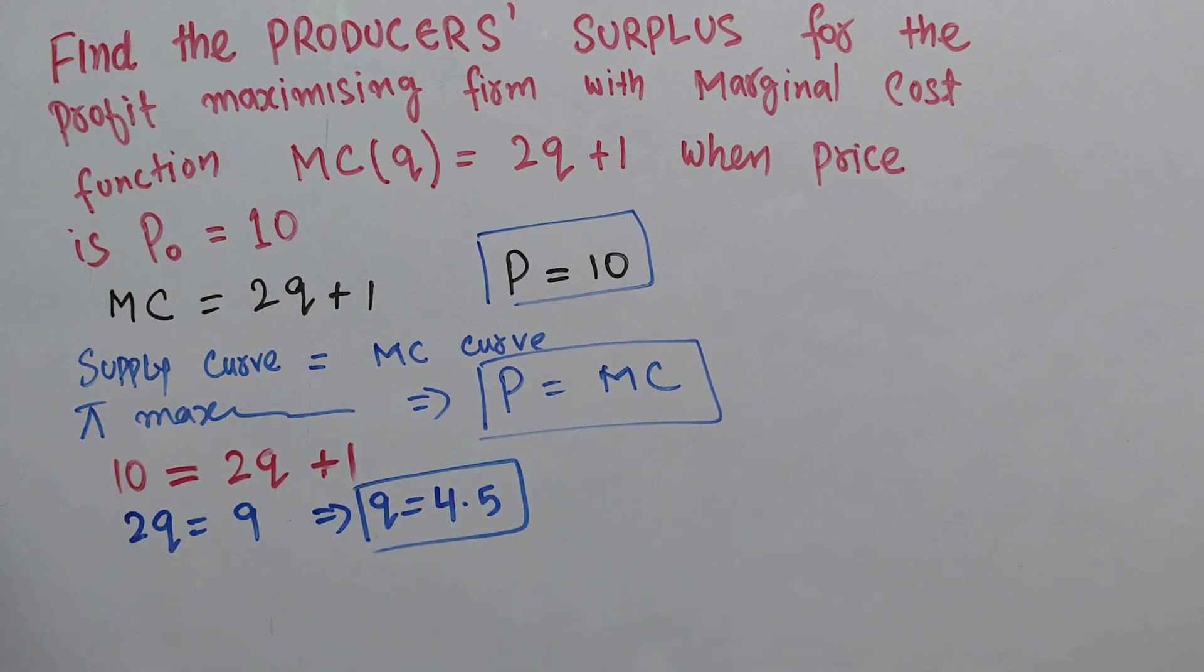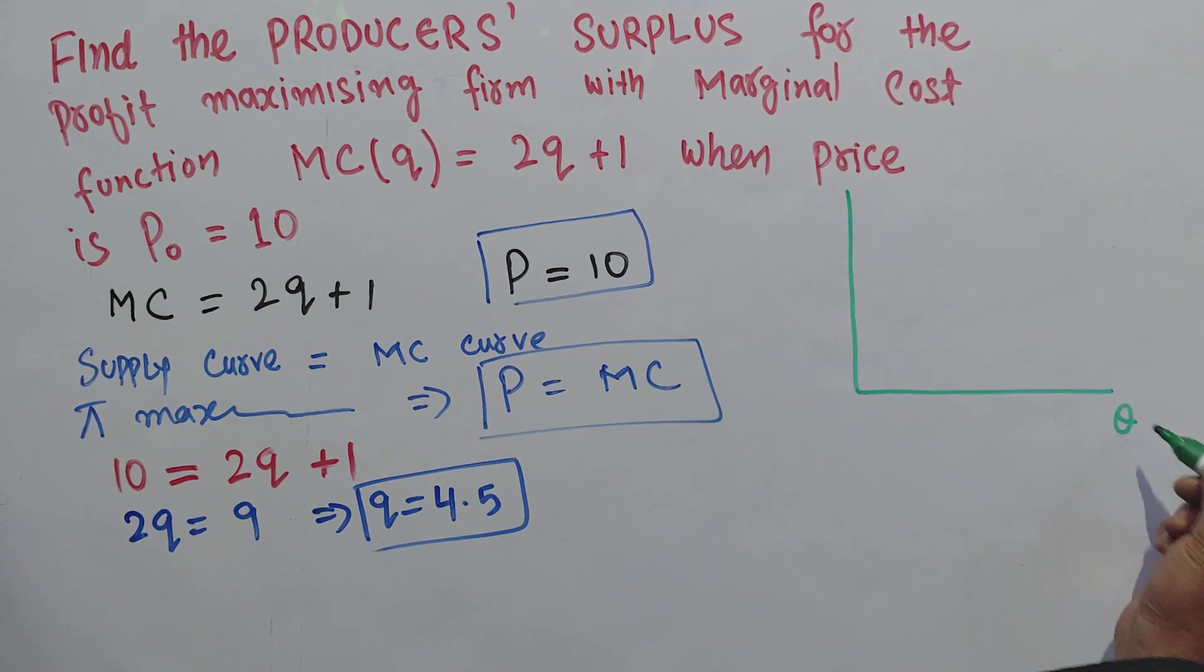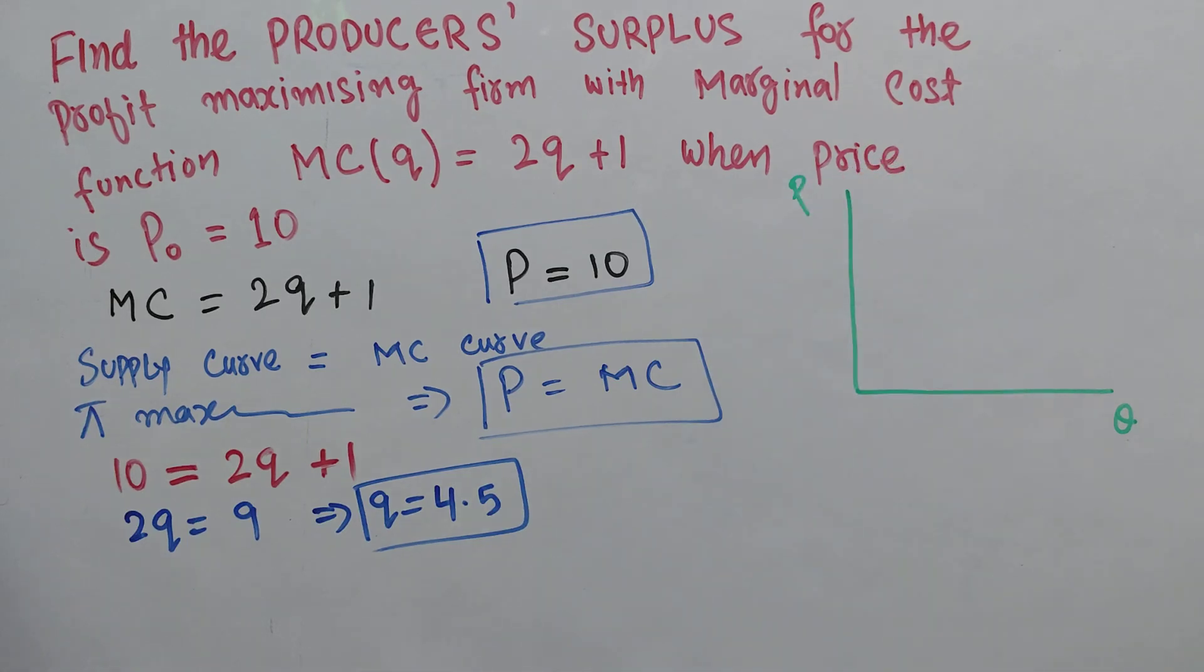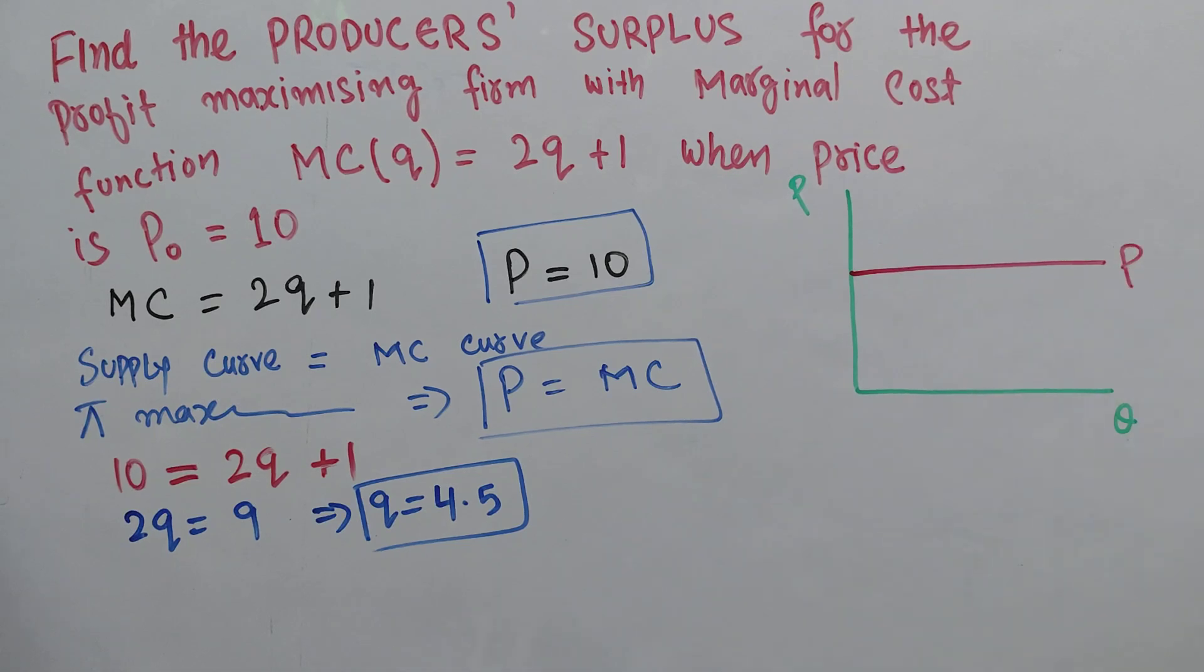Let me draw the graph. We have output on the horizontal axis and price on the vertical axis. We are told that initial price is $10.